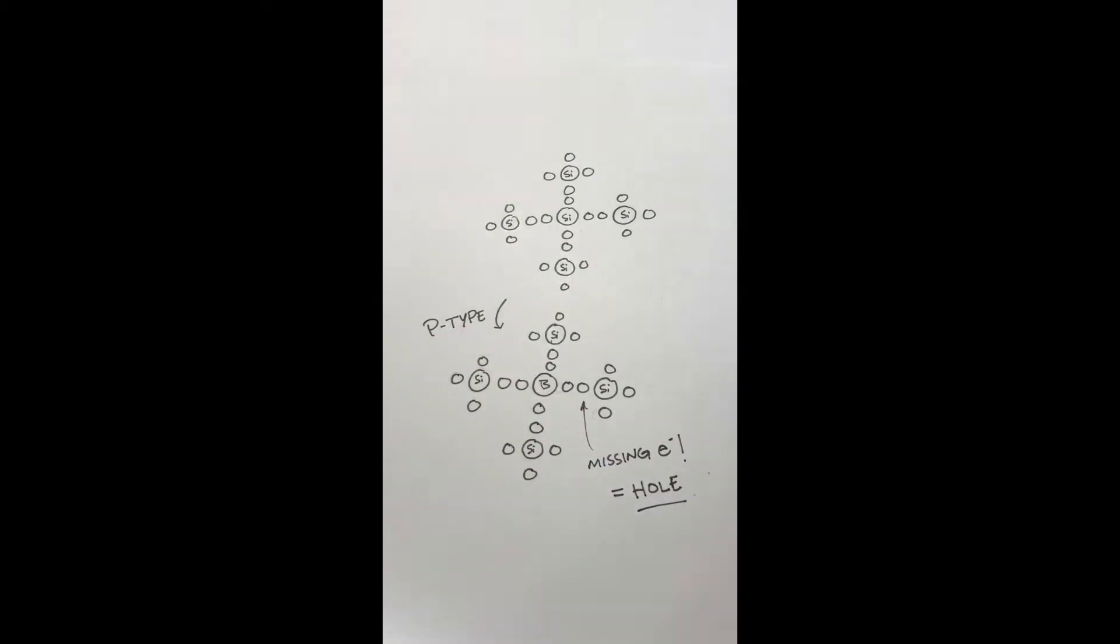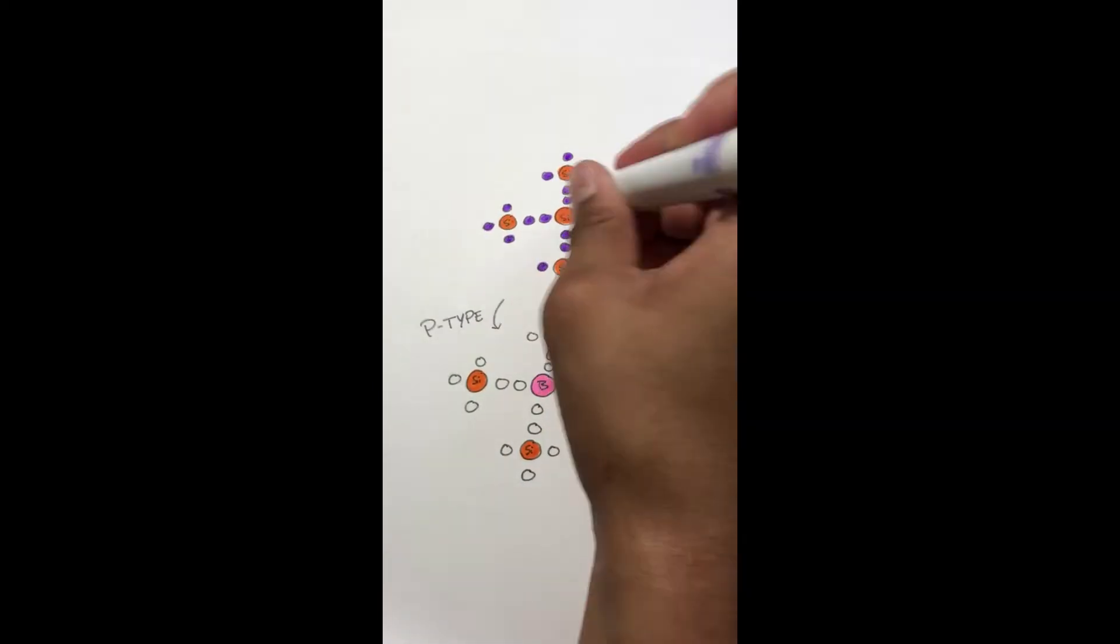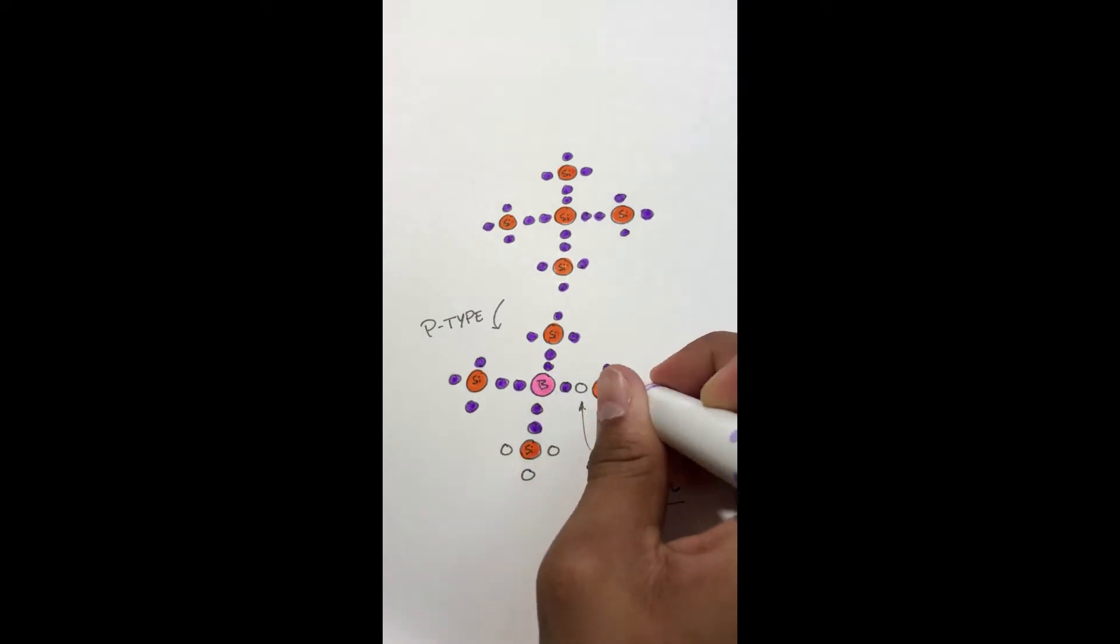Let's go back to the silicon example. If we replace the central atom with a boron atom which has three valence electrons then we see that we lost one electron creating a hole.